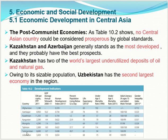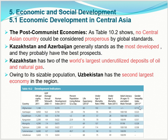Each row is a different country in the region and each column is a different indicator. We have things like gross national income per capita, GDP average annual growth, a composite human development index, and then more specifically things like life expectancy, different mortality rates, adult literacy, and gender inequality.